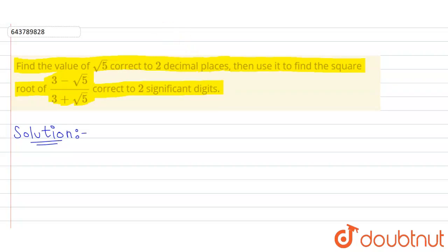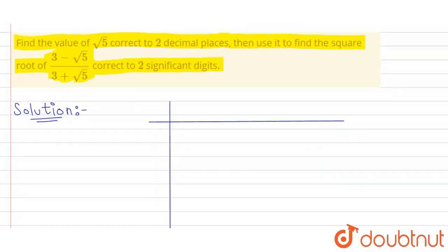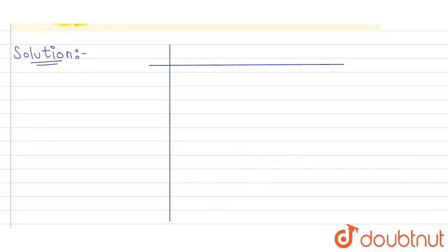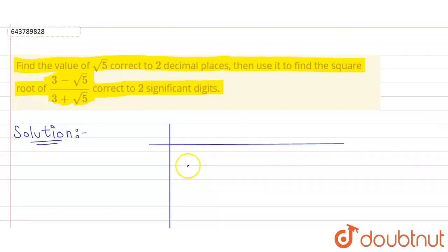So let us start. Now firstly, to make the pairs, we will write 5 as 5.000000. This side will make pairs 2, 2, 2 and 1.